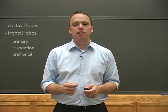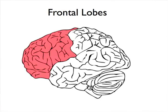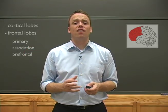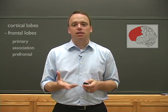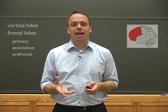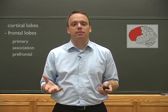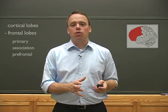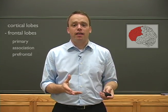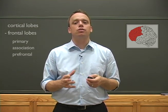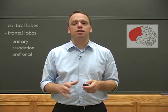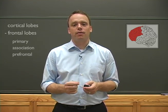The frontal lobes consist of the front one-third of the cerebral cortex. Given its size, it's perhaps not surprising that the frontal lobes are involved in a wide range of functions, including planning, organization, and emotional regulation, to name but a few. The frontal lobe can be differentiated between its primary area — in this case a primary motor area — and several association areas. Let's talk about each of them, beginning with the primary motor cortex.